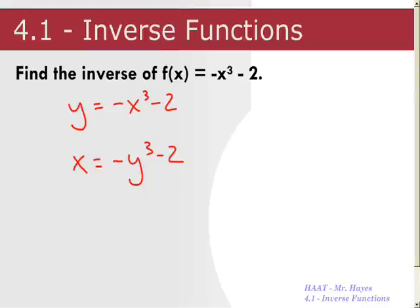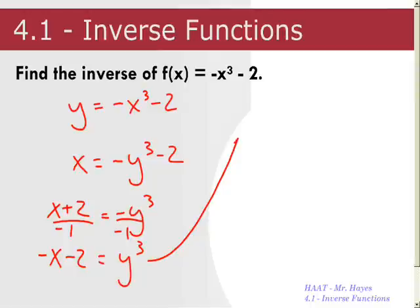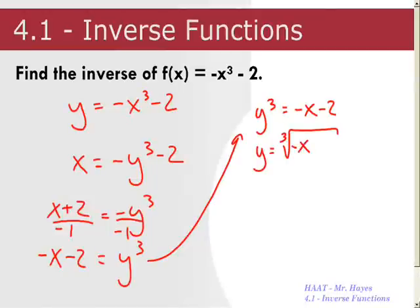So as I solve for y, I'm going to get this. So it becomes x plus two. Then I'm going to divide through by negative one. So that becomes the opposite of x minus two is equal to y to the third. Let me write this up here. So y to the third is going to equal the opposite of x minus two. So y is going to equal the cube root of the opposite of x minus two. And then I'm going to rewrite it in function notation. And that is your inverse.